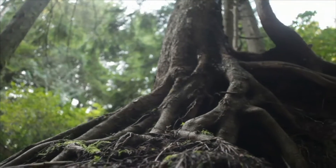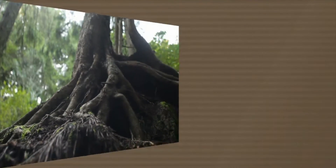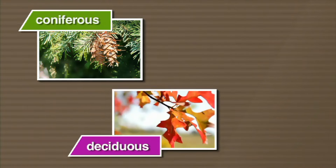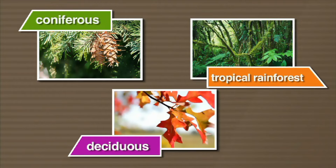There are three kinds of forests found on Earth: coniferous, deciduous, and tropical rainforests.